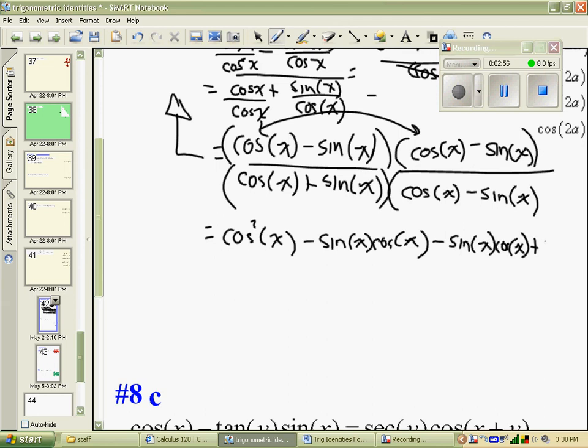In the denominator, you will have cos squared of x. It's not an equals there. So we have cos squared of x, then minus sin cos plus sin cos minus sin squared x.